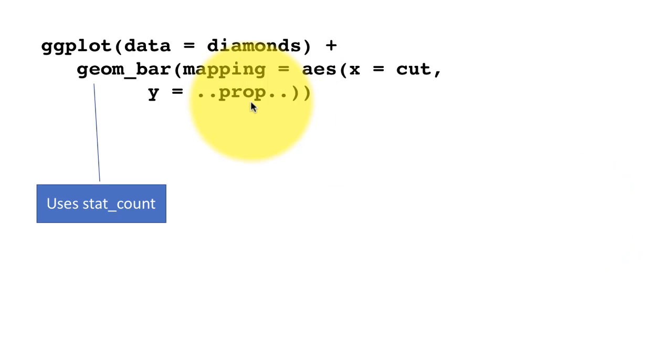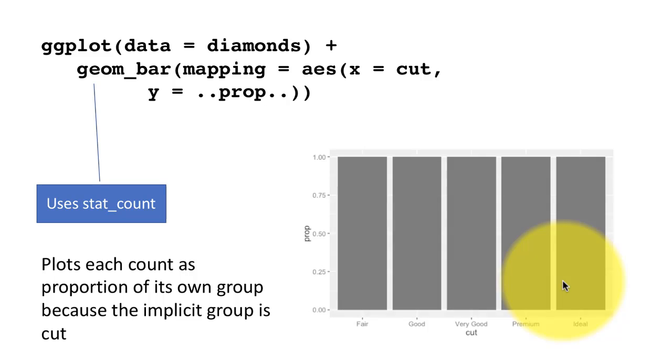If you just did y equals ..prop.. and did not use group equals one, then as I explained, what you get is basically this. It's plotting each group as a proportion of its own group, and then of course each one will be 100 percent. So it's not useful.